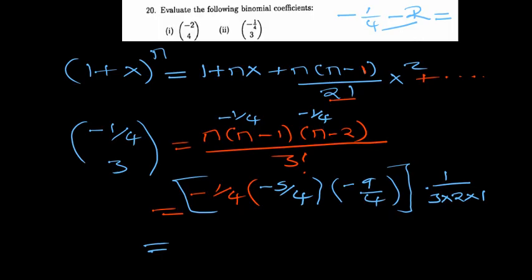So we've got three negatives, so we are going to end up with a negative. 5 × 9 is going to give us 45, and then 4 × 4 is 16, times 4 that should be 64. And then multiply by 1/6.